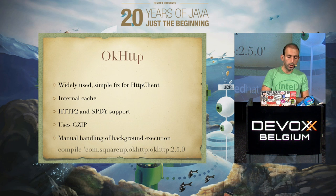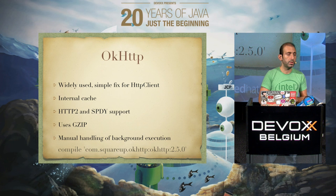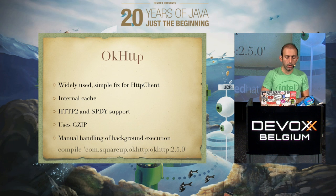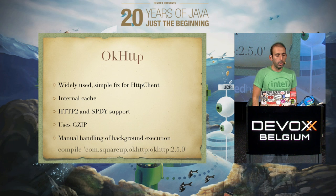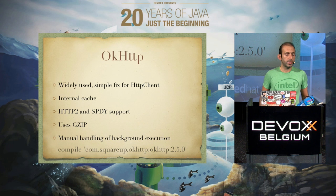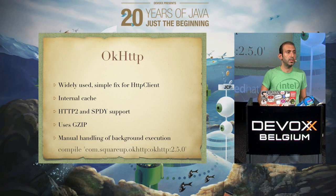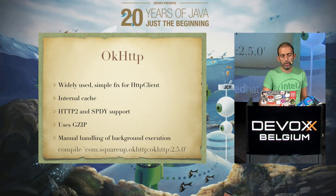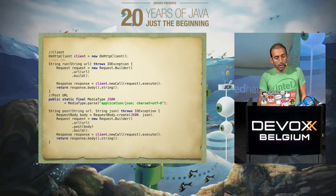OkHttp supports HTTP/2 and SPDY, which is a good point. It internally uses GZIP without requiring any custom coding. You have manual control on background execution. Each slide has the dependency which you need to add to the Gradle file to use the library — once you add those, it should work fine.